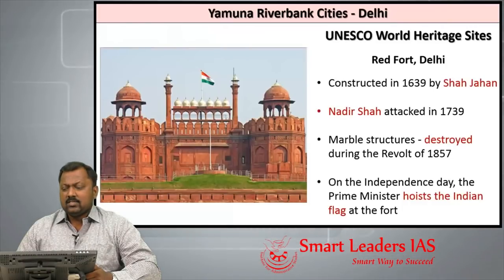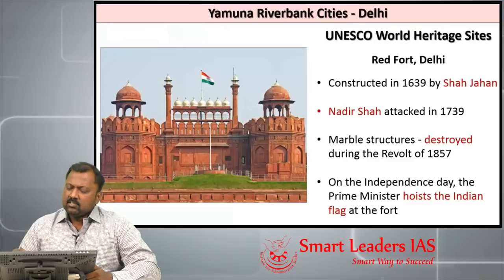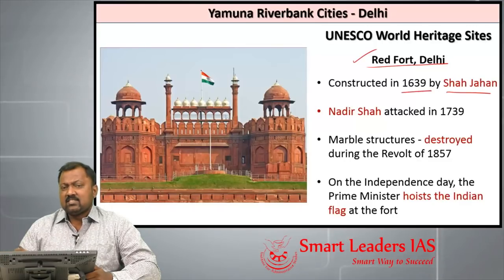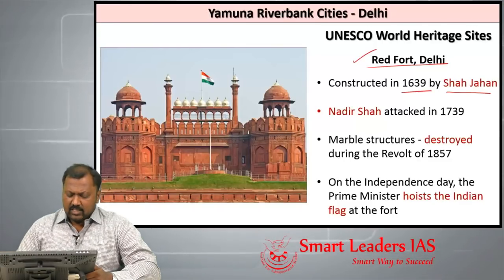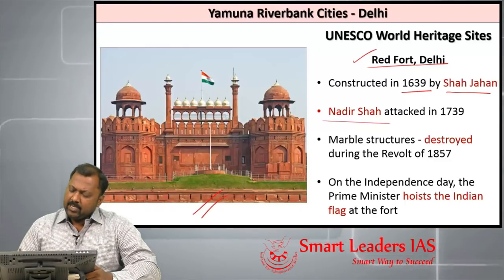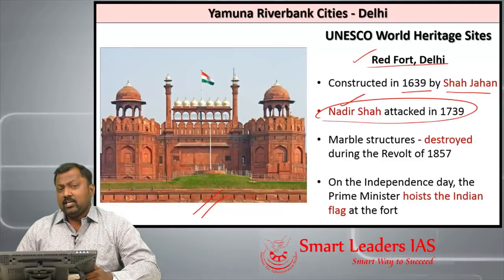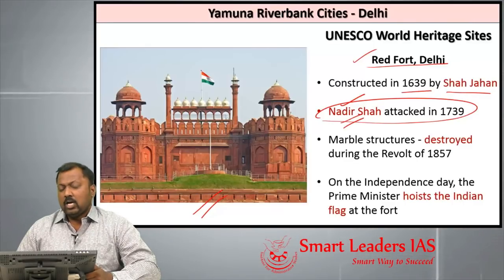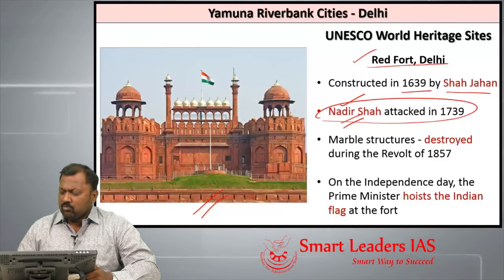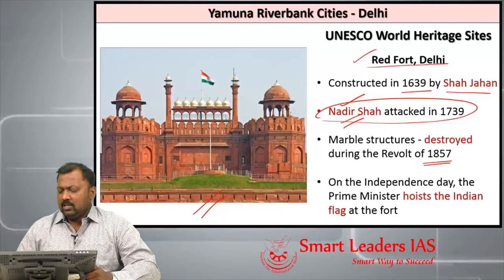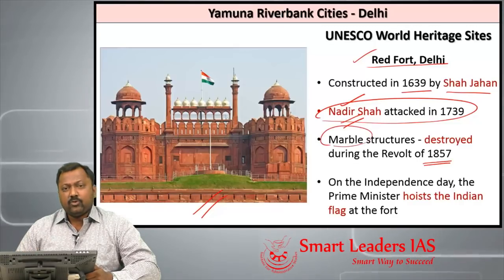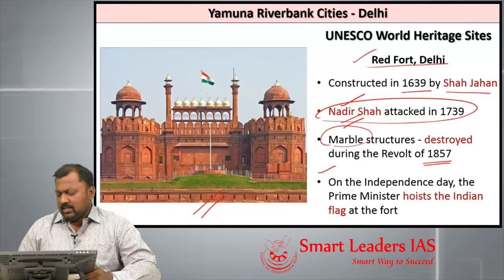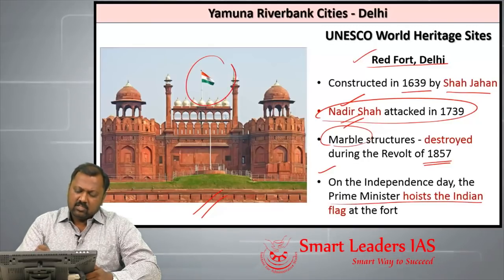The first UNESCO World Heritage site in Delhi is Red Fort. Red Fort was built by Shahjahan in 1639 and is built in red sandstone. It was attacked by Nadir Shah in 1739 during the reign of Muhammad Shah Rangila. Important marble structures inside were destroyed during this attack and also during the Revolt of 1857. On every Independence Day, the Prime Minister of India hoists the national flag from Red Fort Delhi.